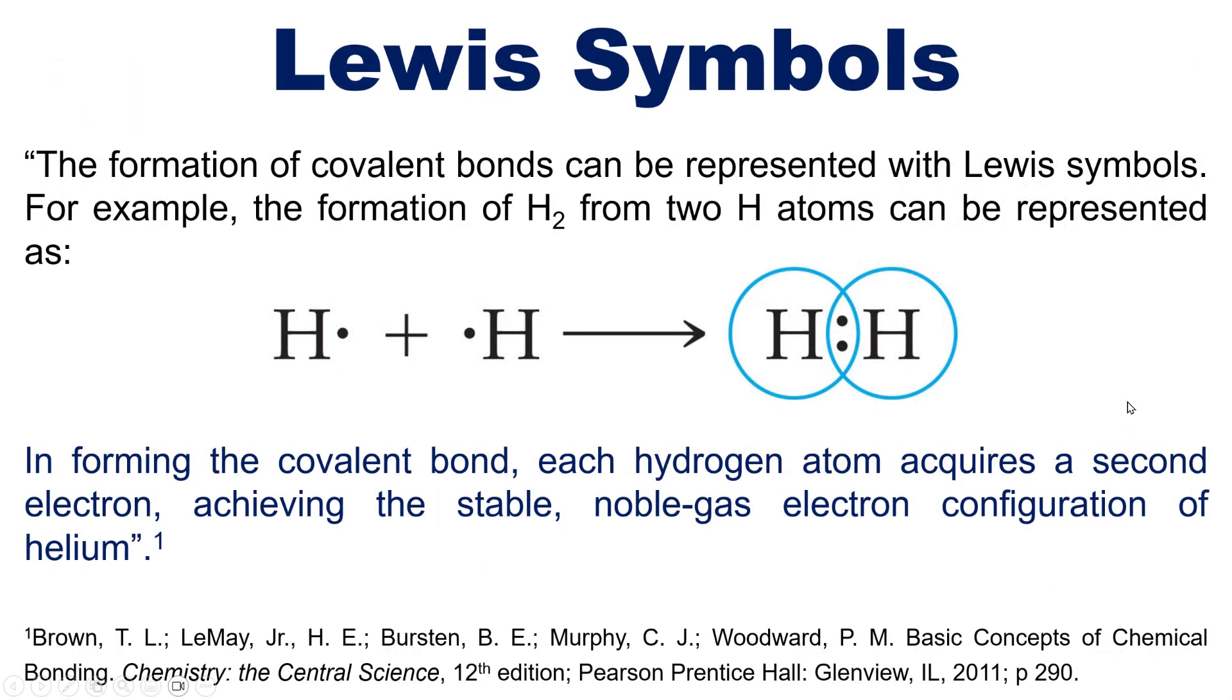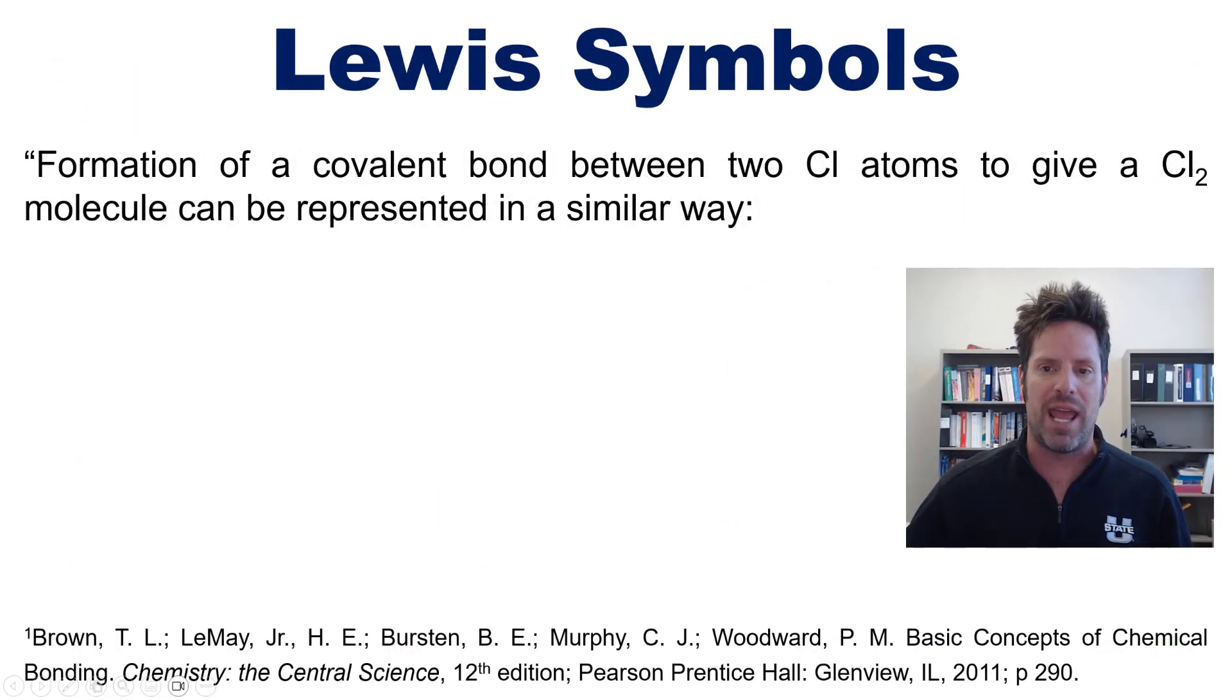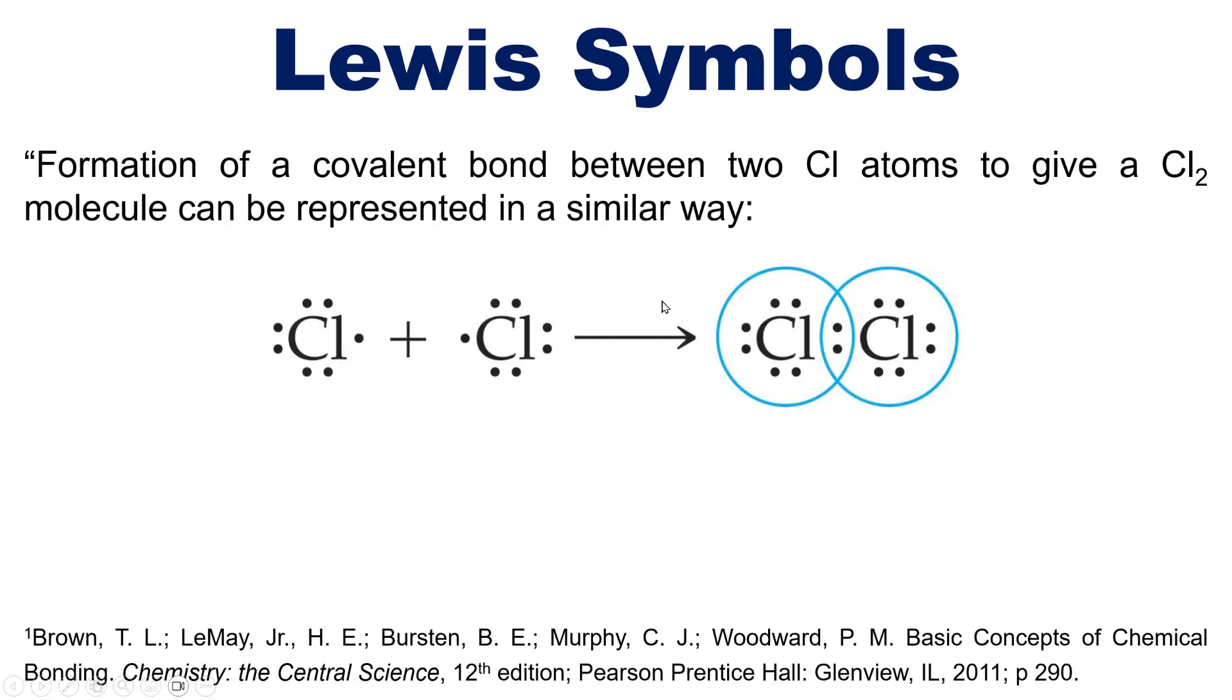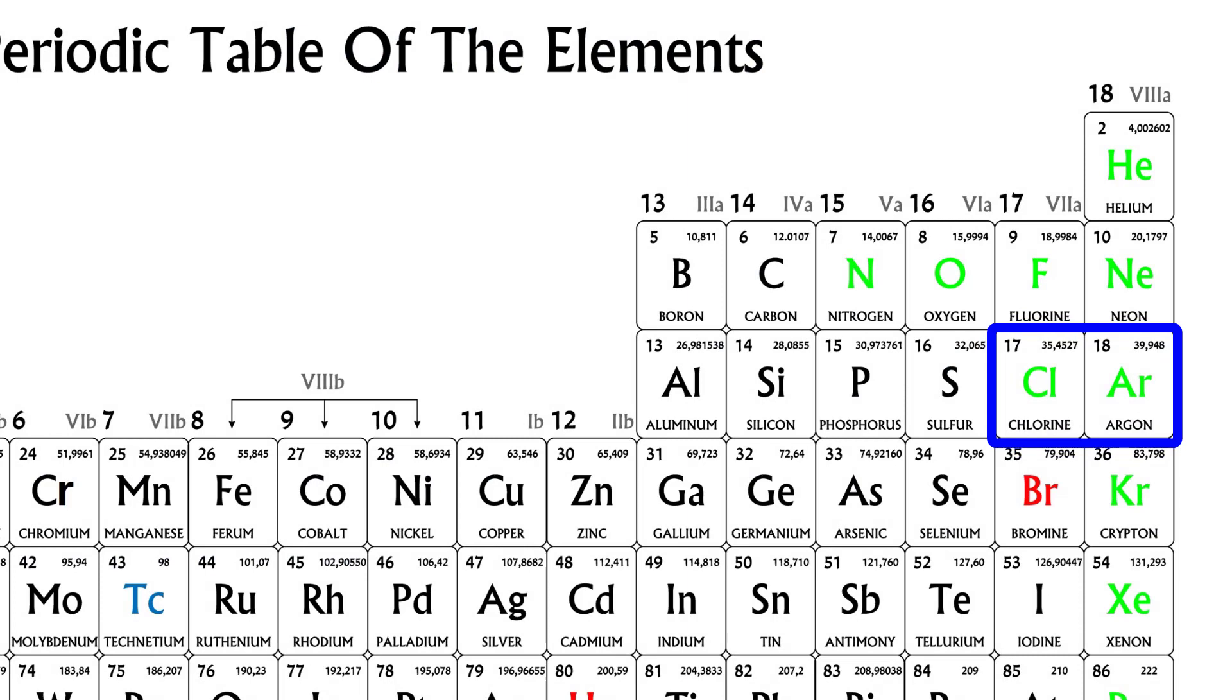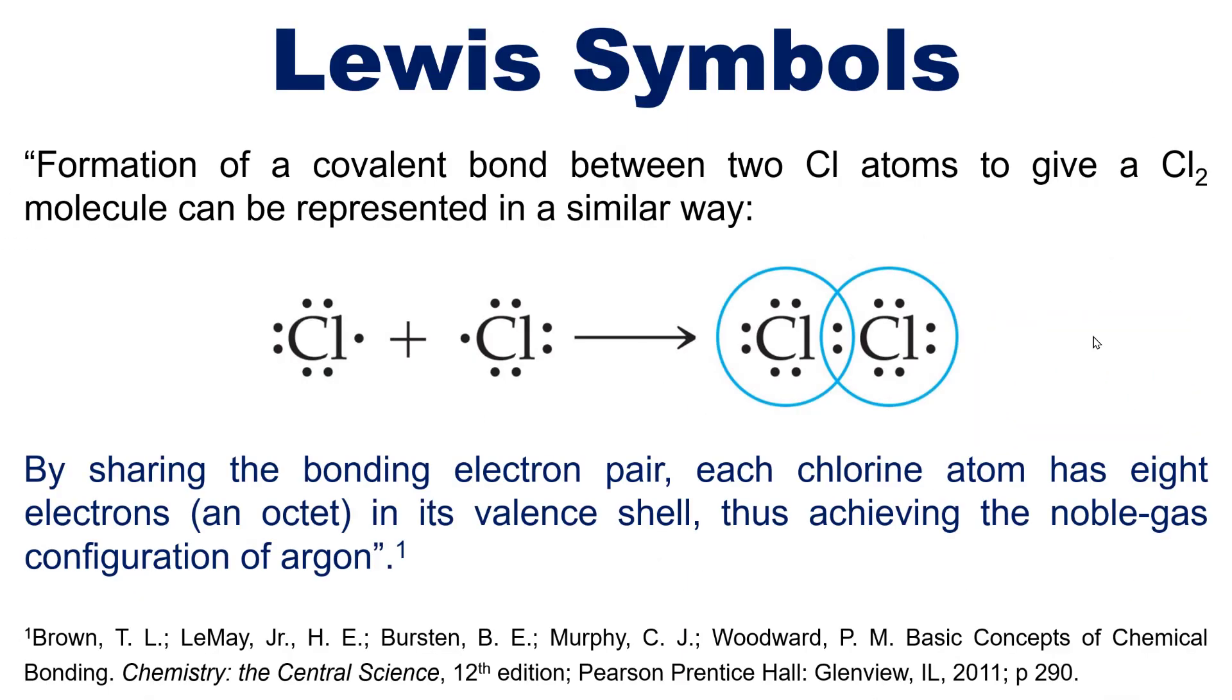Now by comparison, the formation of a covalent bond between two chlorine atoms to give a Cl2 molecule can be represented in a similar way like this. You can see that by sharing the bonding electron pair, that is each sharing one electron like this to form a bond between the two chlorine atoms. Each chlorine ends up having, achieving, or feeling as if it has a full octet of eight electrons encased in the circle around each chlorine atom, thus achieving the noble gas configuration of the neighboring noble gas next to chlorine, which is argon. Does that make sense, okay?